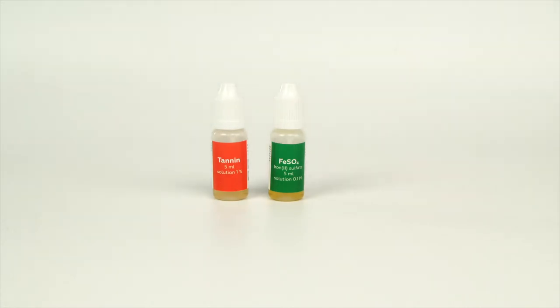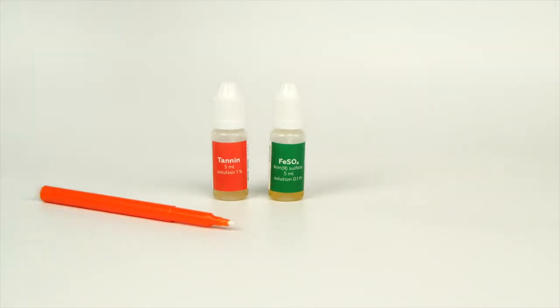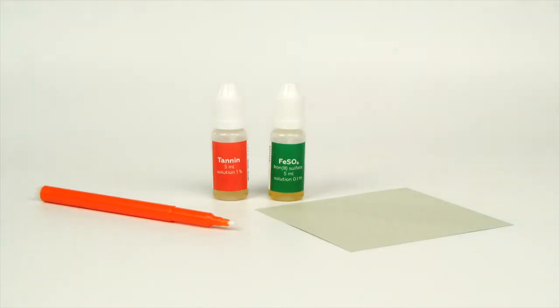For the Iron Gall ink experiment, you will need solutions of tannin and iron sulfate. Take an empty marker, a piece of paper, and a cotton absorbent from your experiment set. Take a disposable plastic cup from your starter kit.